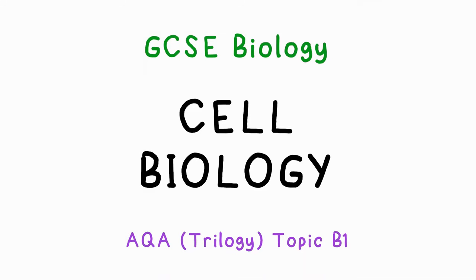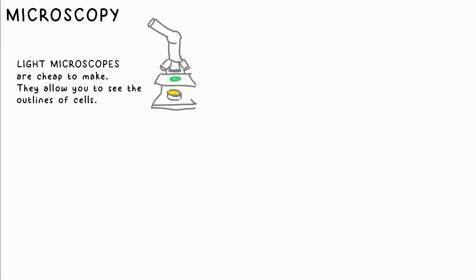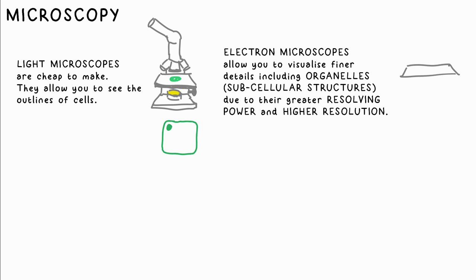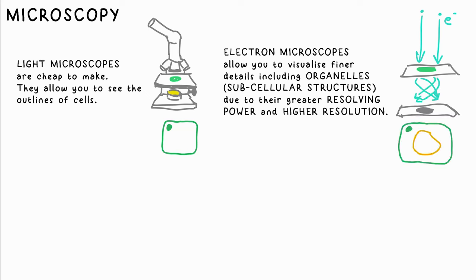All life consists of cells. We can see cells with a normal light microscope, and maybe the nucleus, but the subcellular structures won't really be visible. Using an electron microscope allows us to see far finer details, so we can see an image of the organelles. These microscopes have a better resolving power and a higher resolution.